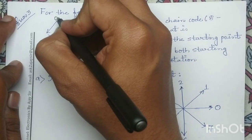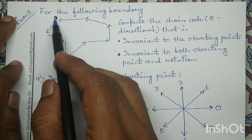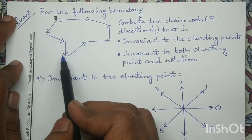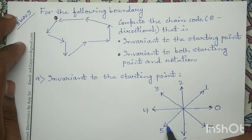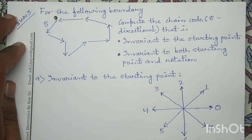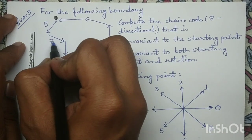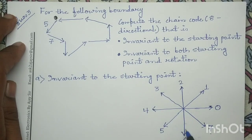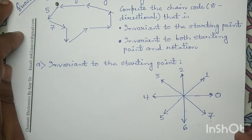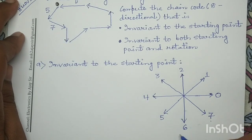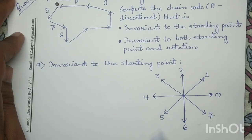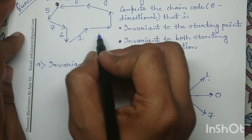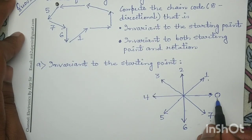So let us assume this is my starting point — this is my origin — from which I will start moving across this boundary. This direction in a directional code is assigned with directional code five, so I will write here five. Next, this direction is assigned with directional code seven, so I will write here seven. Next, this downward direction is assigned with directional code six, so I will write here six. Similarly, this inclined direction is assigned with directional code one, so I will write here one. This forward direction is assigned with directional code zero, so I will write here zero.